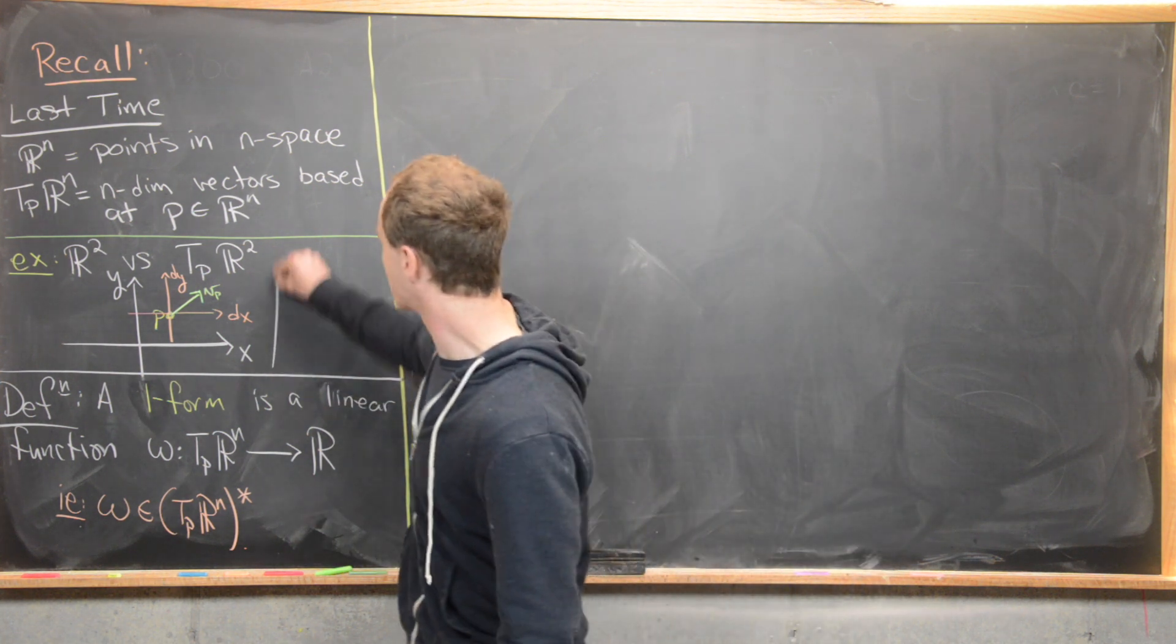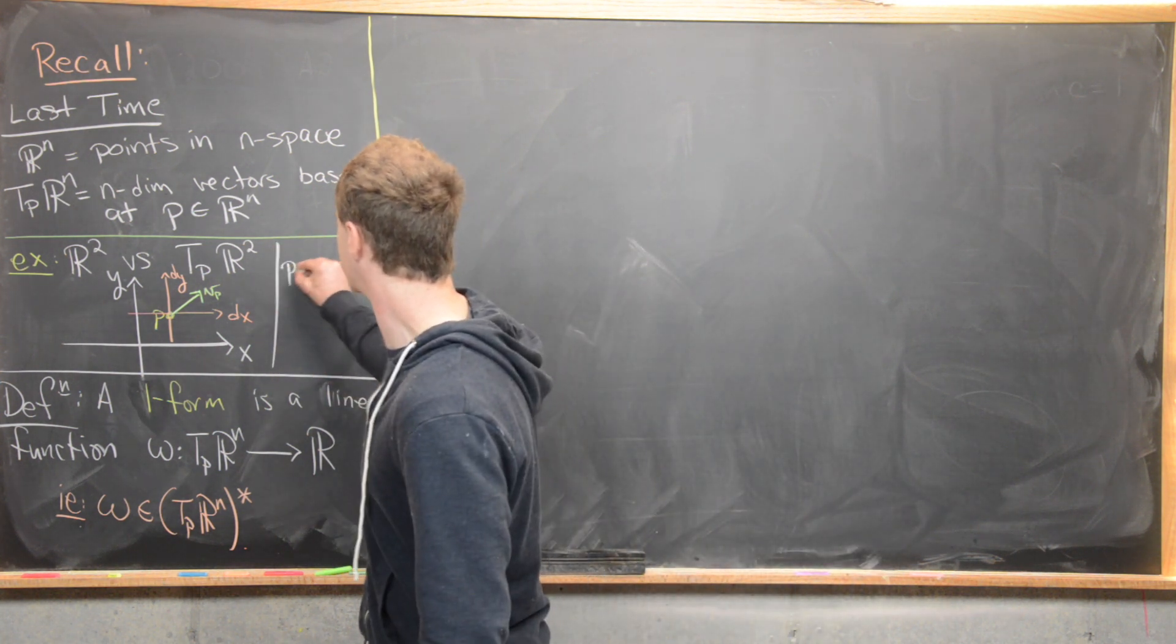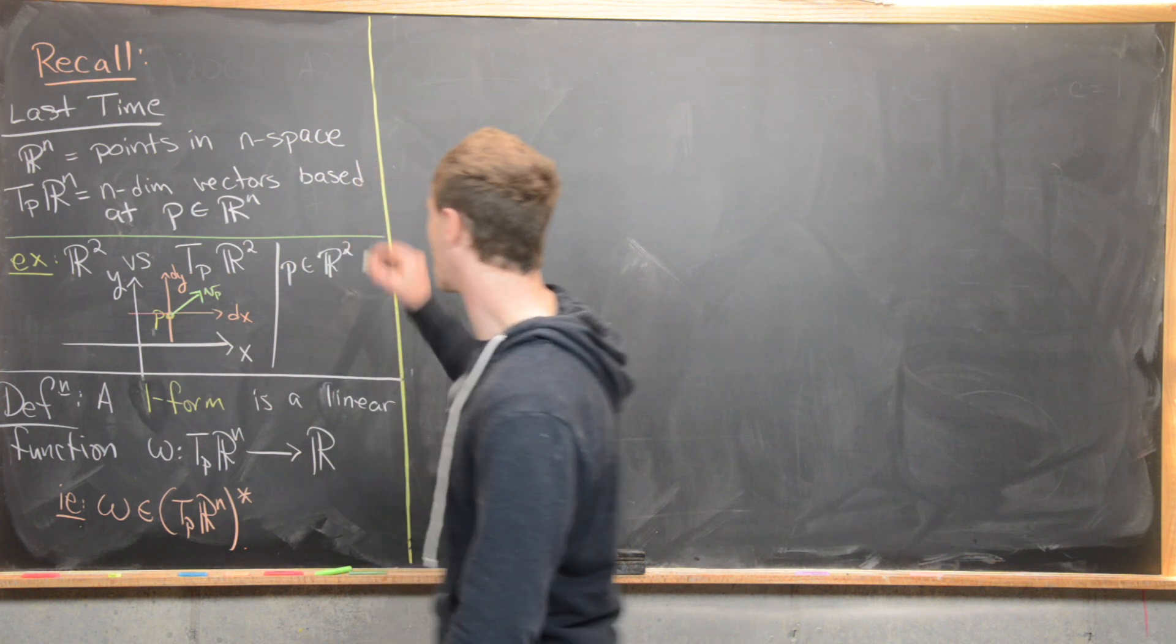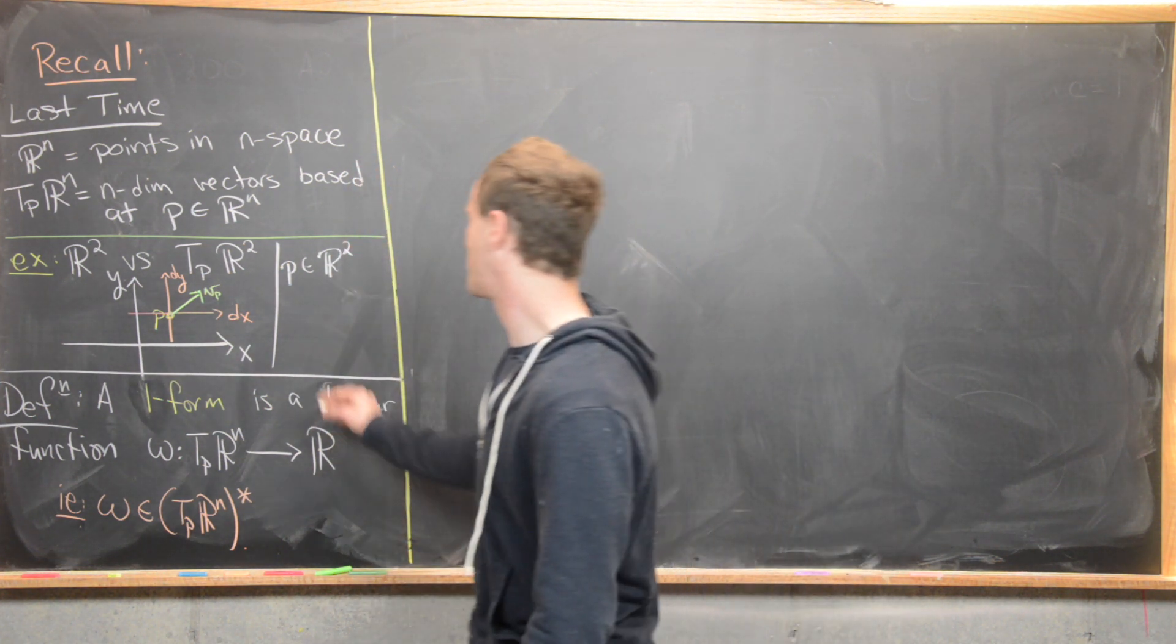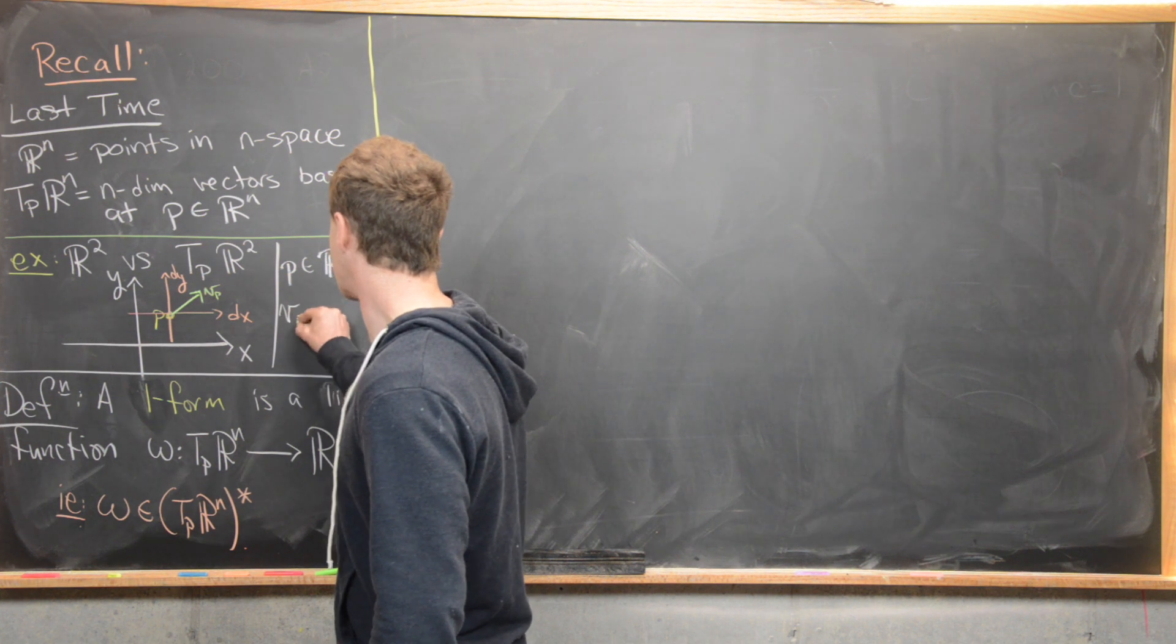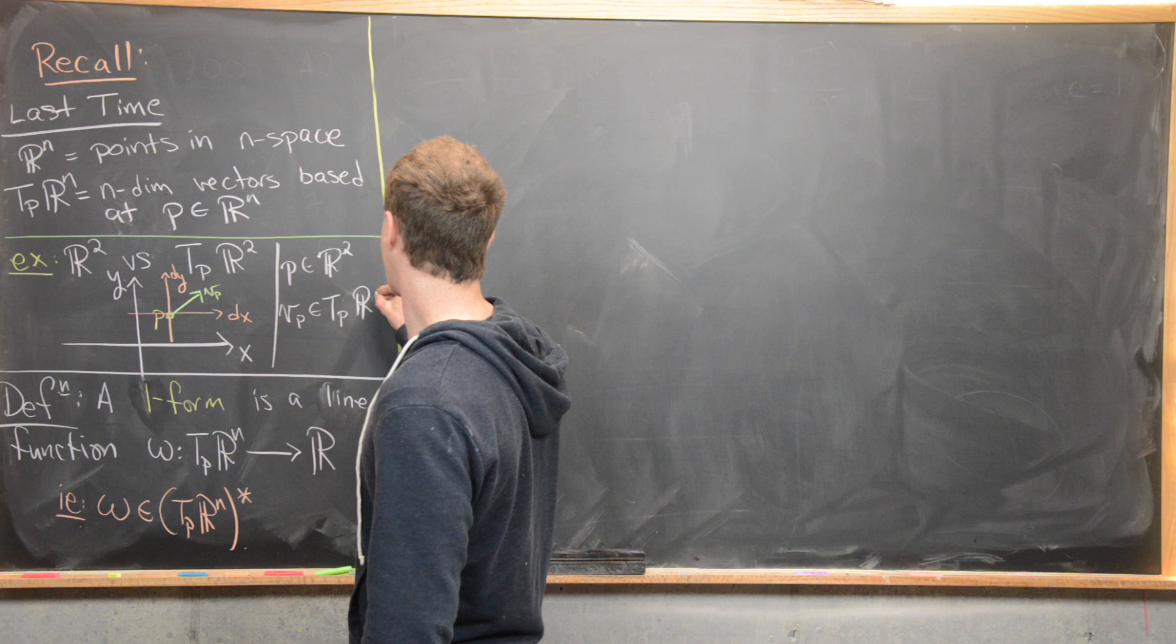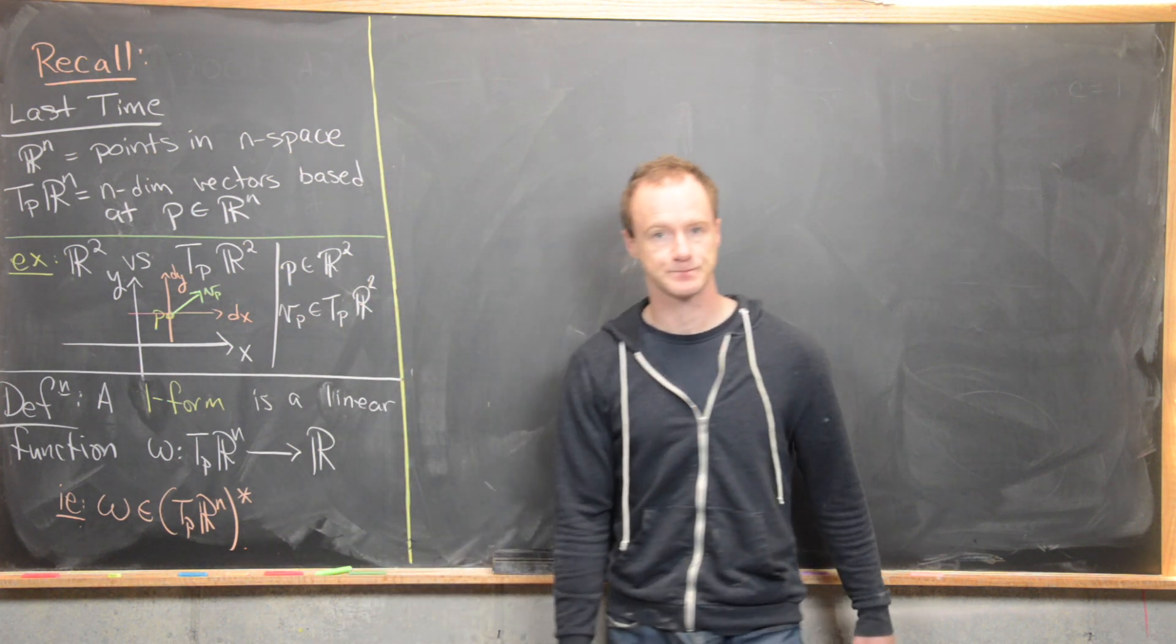So just to reiterate here, we're thinking about this point p as being a point in the plane, so in R^2, but then we're thinking about this vector v_p as being in this tangent space of the plane based at R^2.